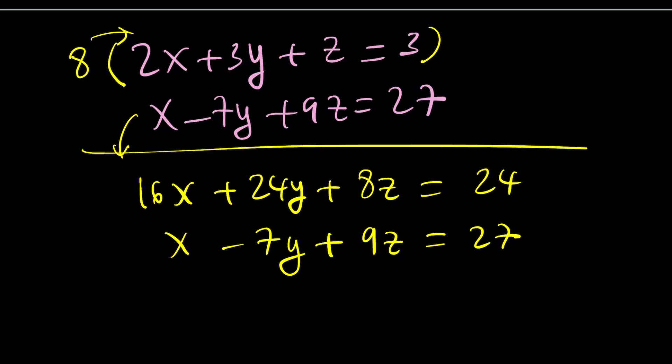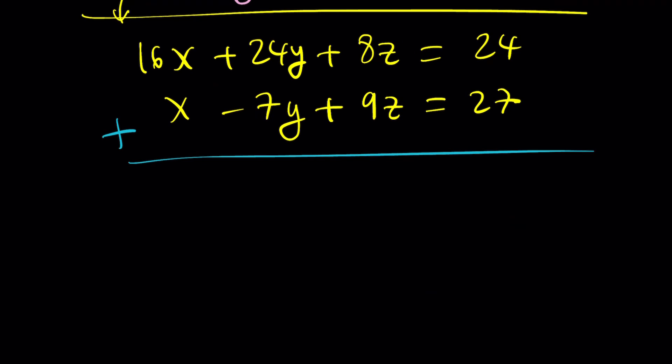Let's go ahead and do this. Distribute the 8. You're going to get 16x plus 24y plus 8z equals 24. And the second equation is just going to stay as is. x minus 7y plus 9z equals 27. And guess what? This is going to be awesome. Because when we add these two equations, you're going to get something nice.